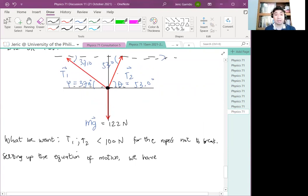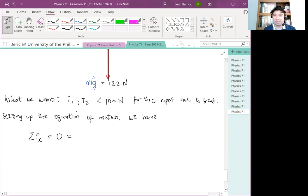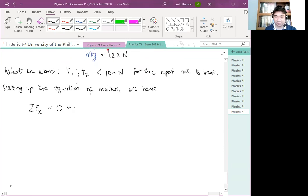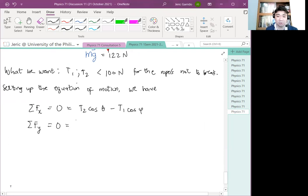Ang lalabas diyan ay summation of forces acting on x for this particular object. It's just equal to what? You want this to be at rest. So zero to. So hence, since lahat naman sila ay with respect to x, wala tayong problema sa angles. And therefore, T2 cosine of theta minus T1 cosine of phi. Tama? Remember, so in that case, yung tension 1 tsaka tension 2 ay nagkokontrahan in the horizontal direction. Whereas in the vertical direction, nagsasama sila, ikinokontrahan sila yung weight.